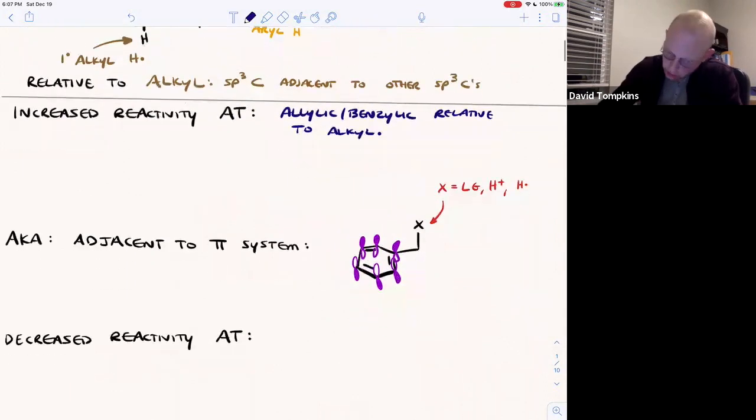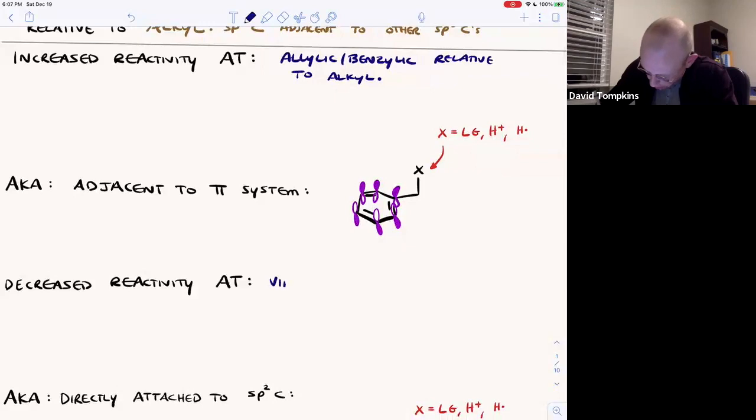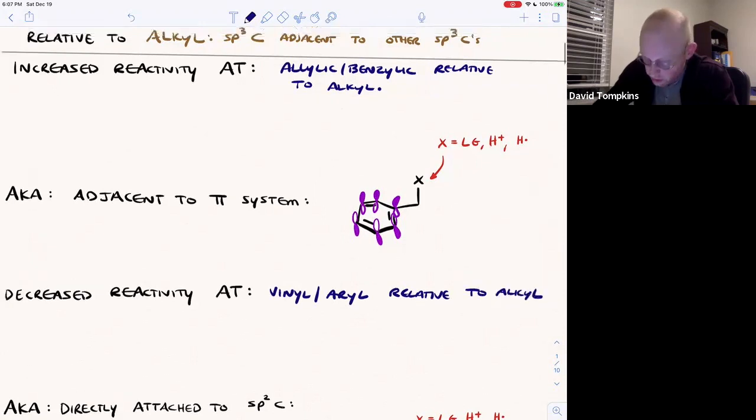And there's generally a decreased reactivity at the vinyl and aryl positions relative to the alkyl. Those are the ones that required forcing conditions.